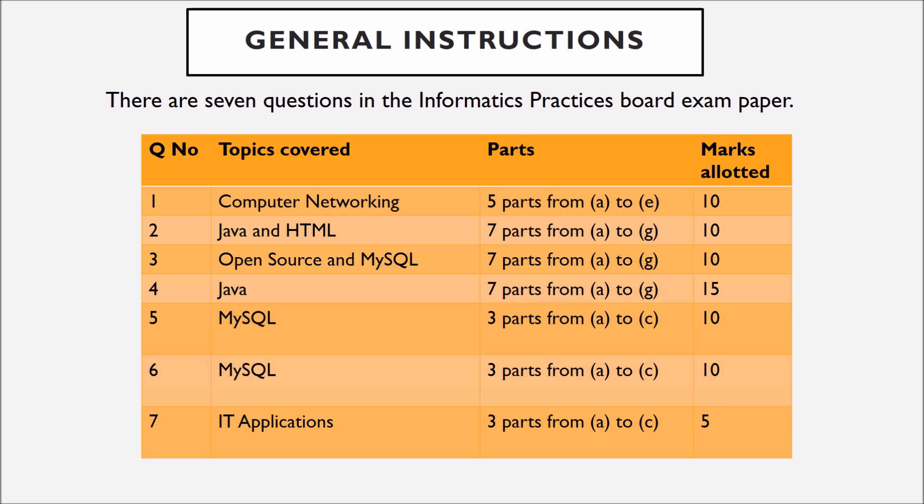There are seven questions in the informatics practices board exam paper. Question number one is based on the topic computer networking. It has five parts from A to E and is of 10 marks.